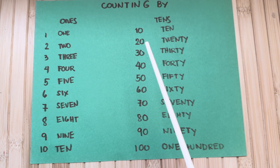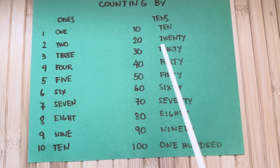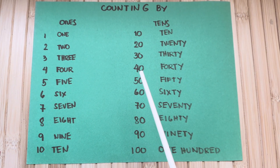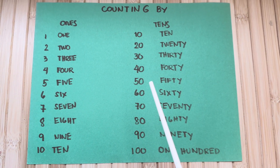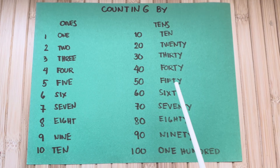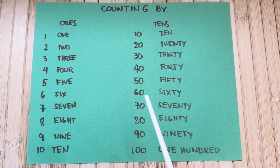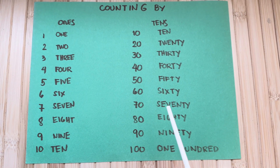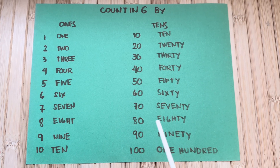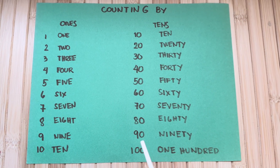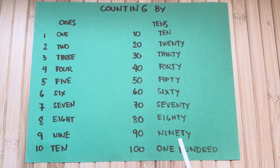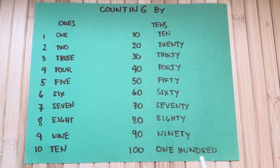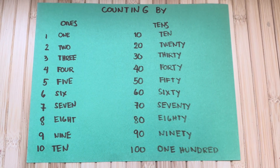And now let's count by tens. Ten, twenty, thirty, forty, fifty, sixty, seventy, eighty, ninety, and one hundred.